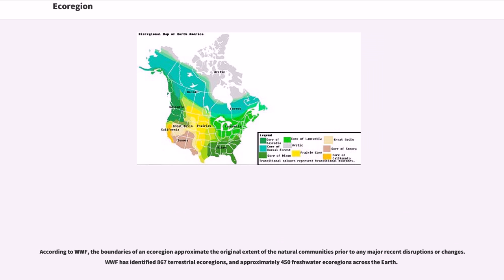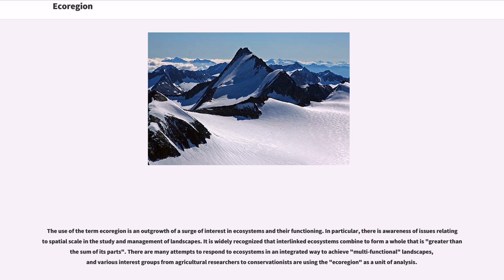The use of the term ecoregion is an outgrowth of a surge of interest in ecosystems and their functioning. In particular, there is awareness of issues relating to spatial scale in the study and management of landscapes. It is widely recognized that interlinked ecosystems combine to form a whole that is greater than some of its parts. There are many attempts to respond to ecosystems in an integrated way to achieve multifunctional landscapes, and various interest groups from agricultural researchers to conservationists are using the ecoregion as a unit of analysis.